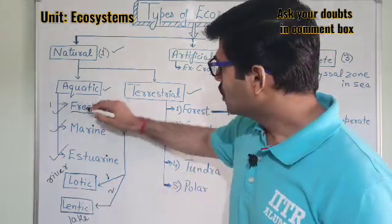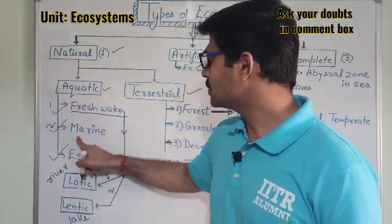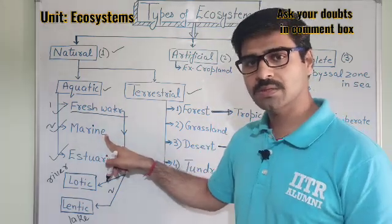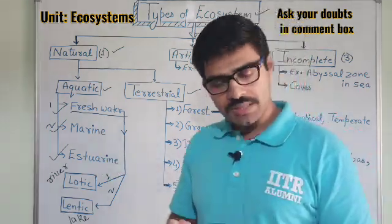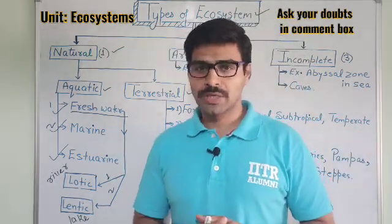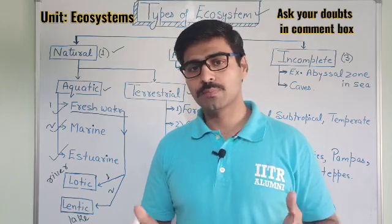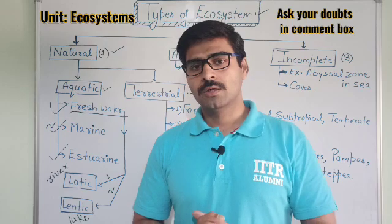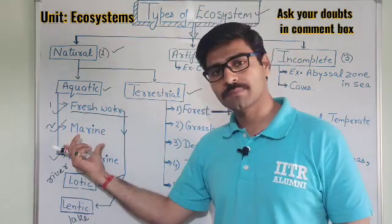The second type of aquatic ecosystem is the marine ecosystem, with examples being seas and oceans. In seas and oceans, a variety of living organisms are present — producers, decomposers, coral reefs — all of these make up the marine ecosystem.